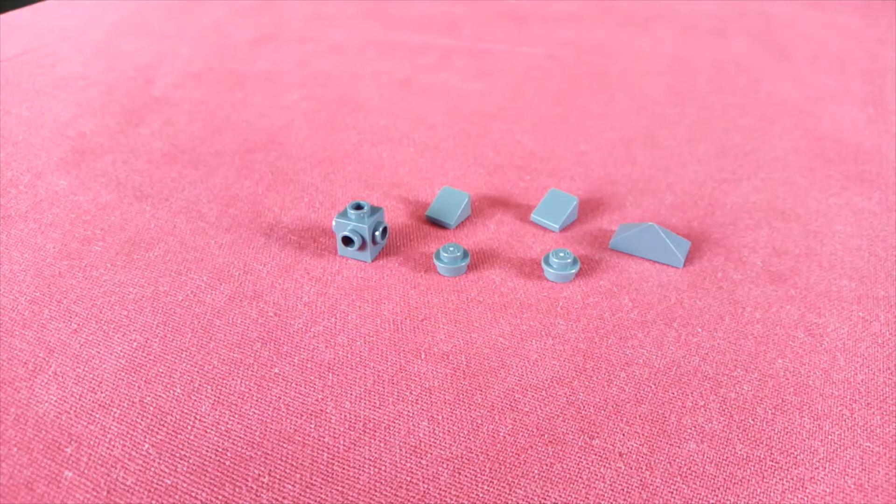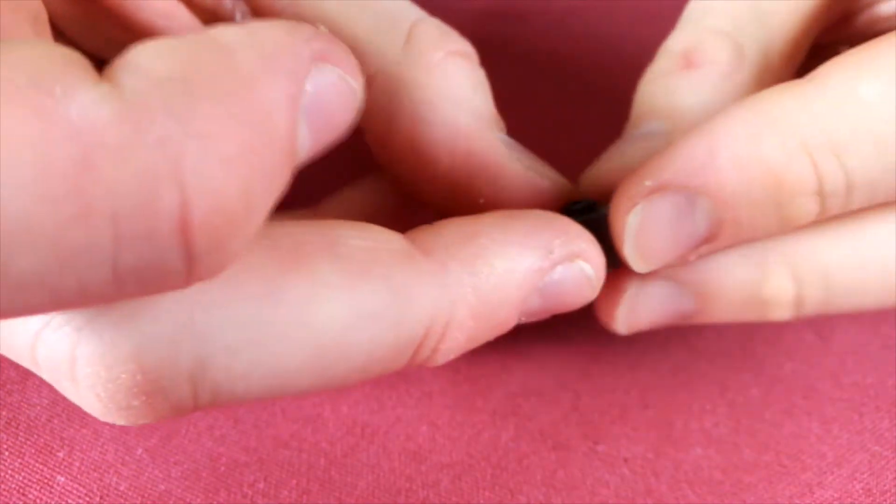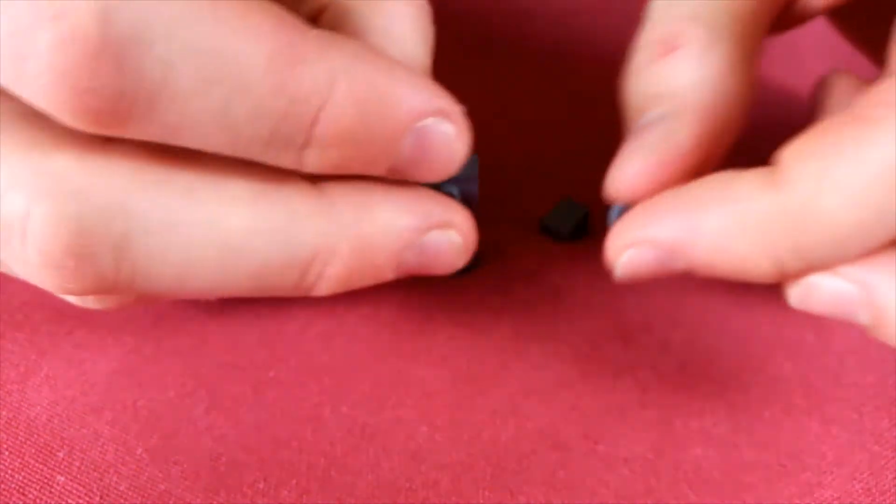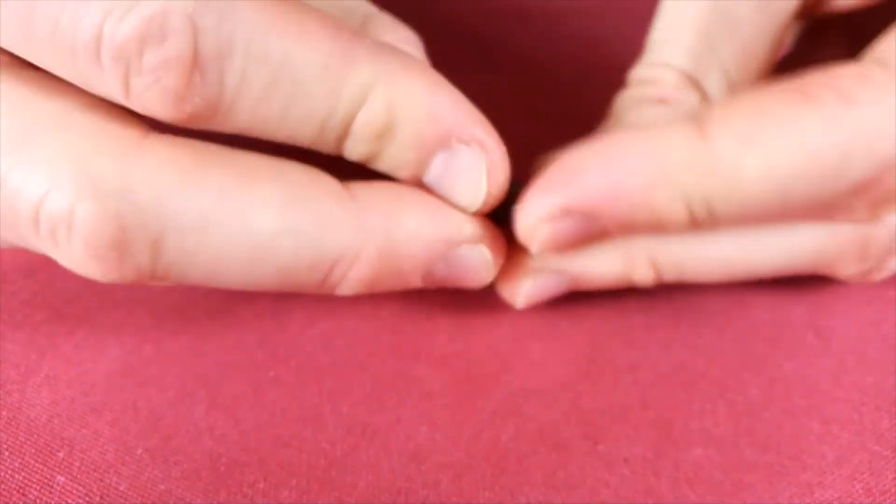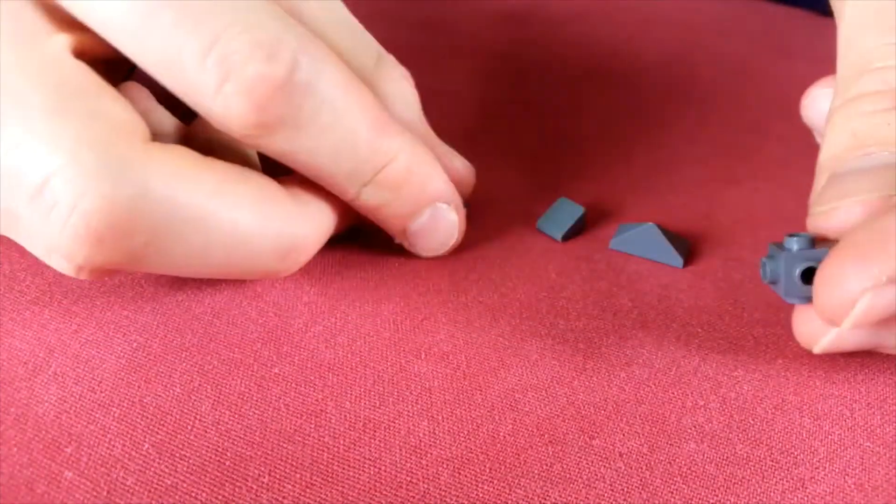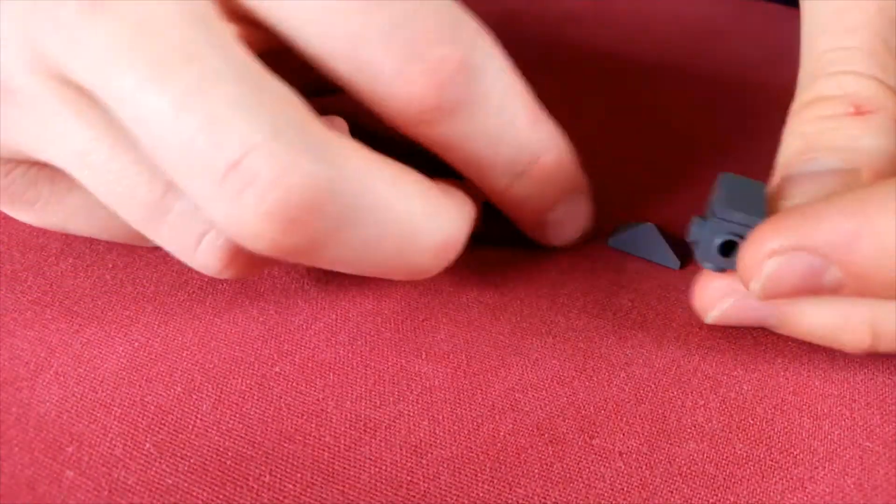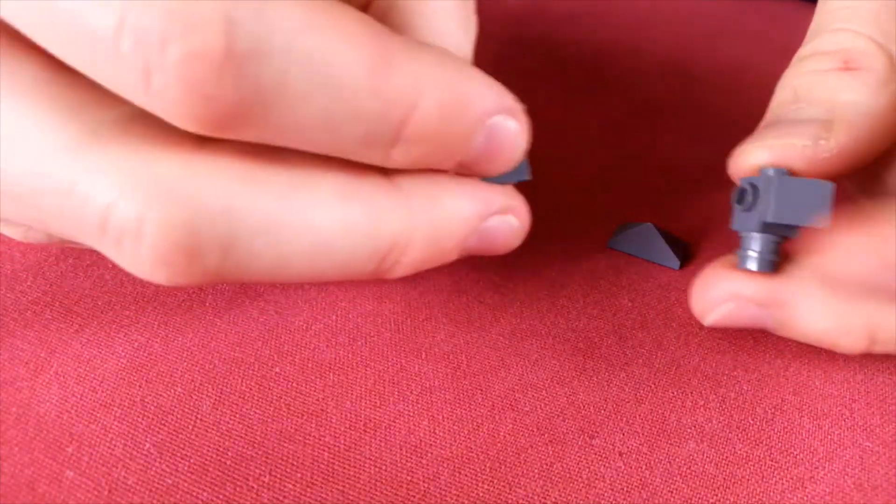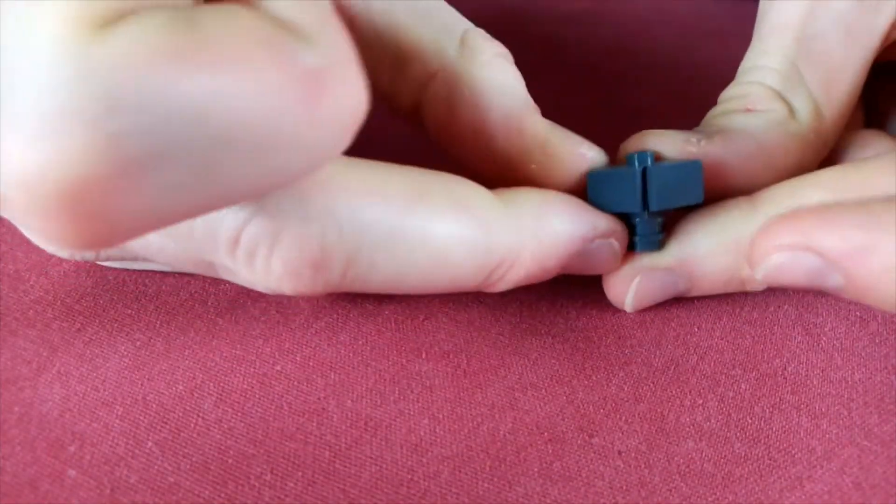Moving on now to one of the corners. Start with this SNOT brick with studs on all four sides and take two studs and place them underneath just like that. Now take your first cheese slope, put it on one corner there, and then take your next cheese slope and put it pointing in the opposite direction on the stud next to it.